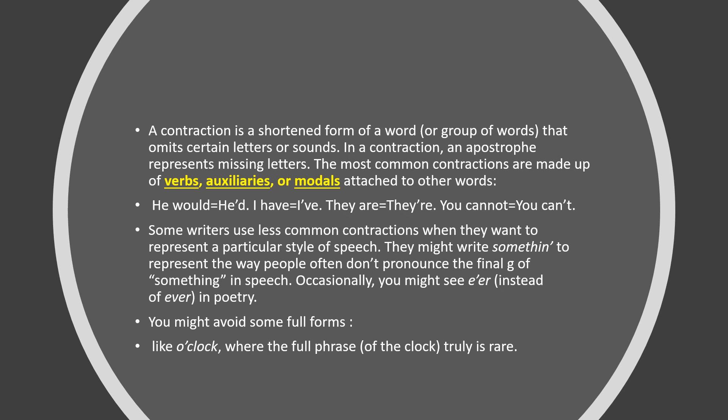Sometimes, like Americans or South Americans, people omit sounds in certain words. For example, 'something' — the G is usually omitted in speech, so we can write 'somethin'' with an apostrophe after the N. Also, occasionally you may see 'ever' written as 'e'er' — you might have seen this in poetry. That apostrophe-ER form means 'ever.'